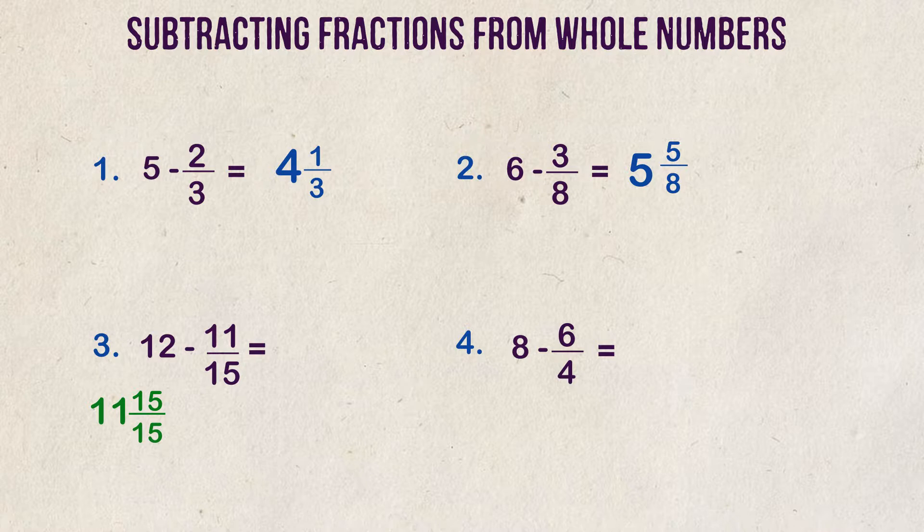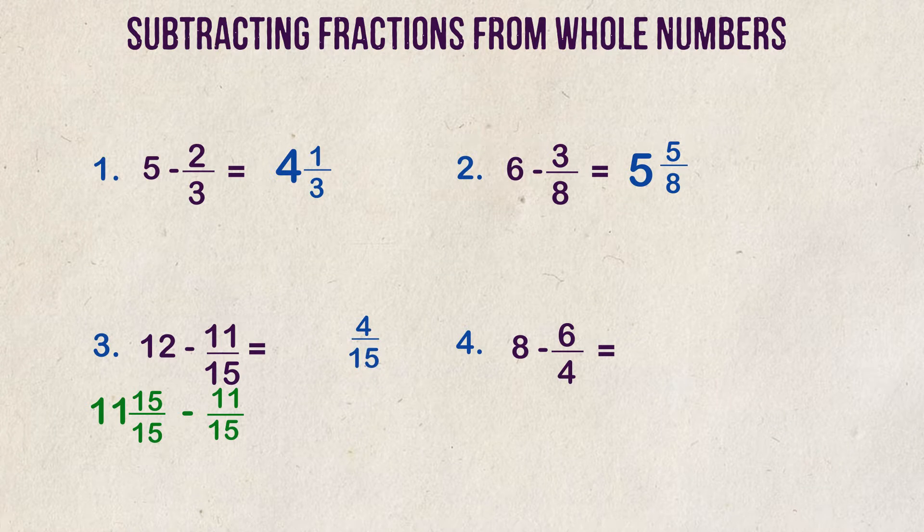We write our problem now to be 11 and 15 fifteenths minus 11 fifteenths. Since the denominators are the same, we can subtract the numerators and get 4 fifteenths. We put the 11 in front of our answer, and the answer is 11 and 4 fifteenths.